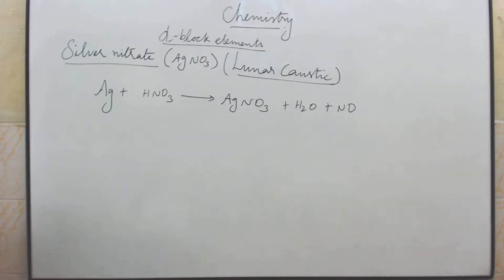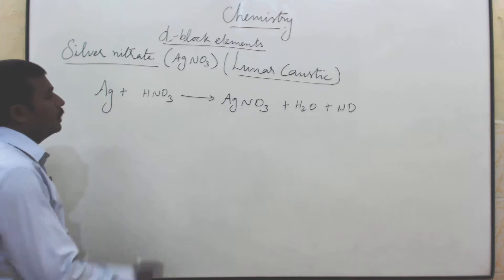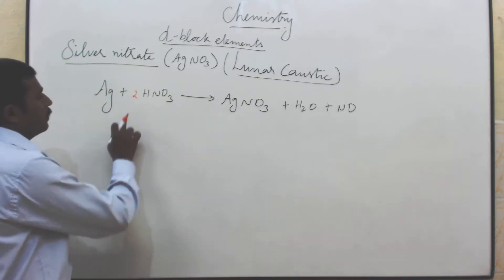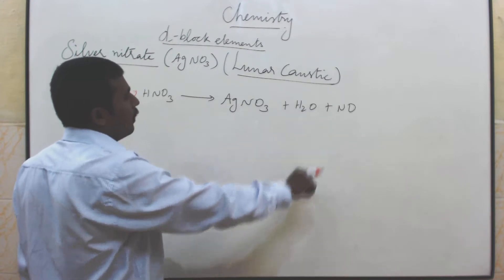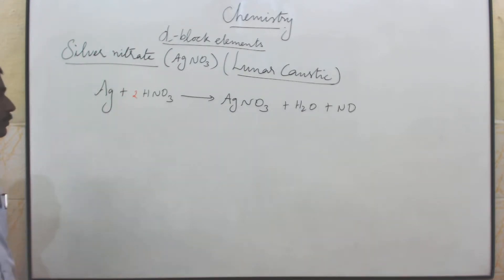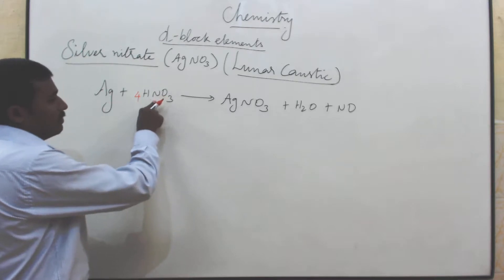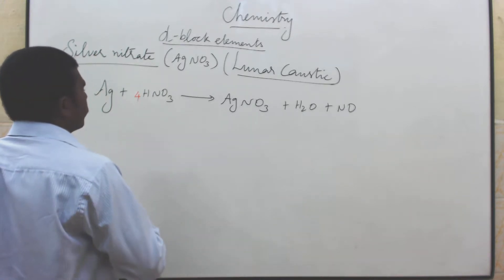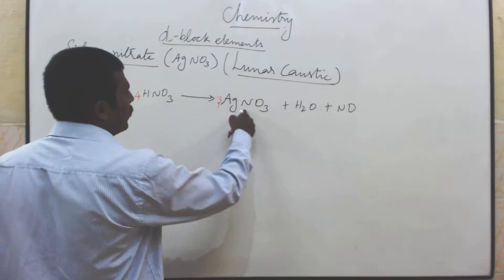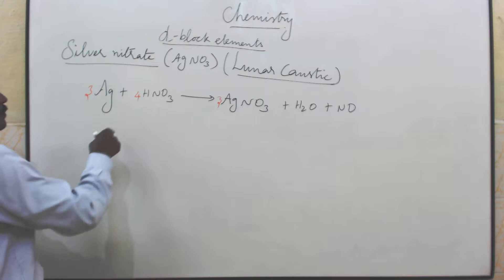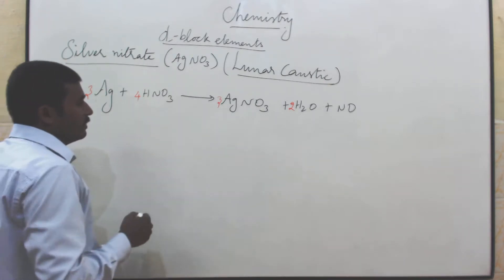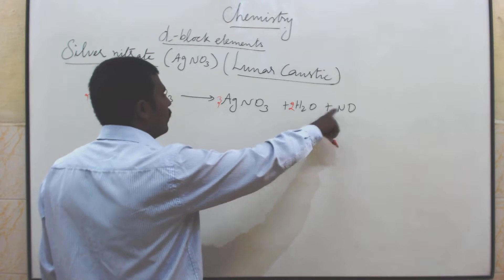How to balance the equation? Starting with one silver and one nitrogen on each side — there are two nitrogen on one side. Trying coefficient two gives six oxygen on one side but only five on the other, so two is not correct. Trying four gives four nitrogen on one side but only two on the other. Trying three: three plus one gives four nitrogen, three silver, four hydrogen, four nitrogen, and twelve oxygen balanced against nine plus two equals eleven plus one equals twelve. So the equation is balanced.